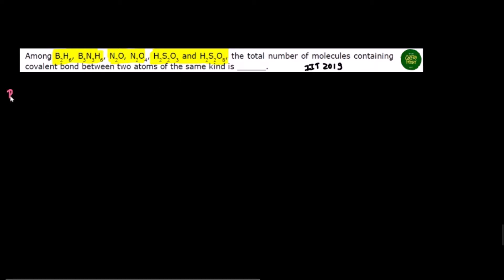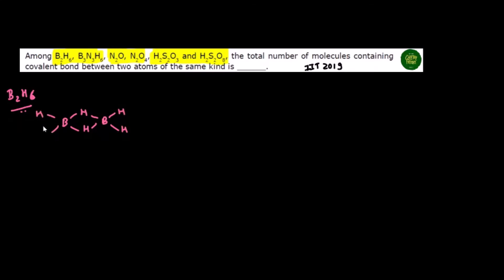If you look at B2H6, when we study the boron chapter, we look at it carefully. We also have two bonds between this boron and this boron. This is a special kind of bond — three-centered two-electron bonds. So there is no boron-boron or hydrogen-hydrogen same-element linkage here.